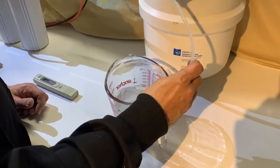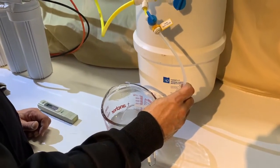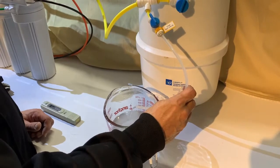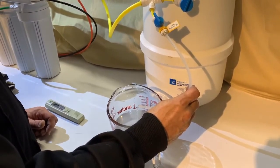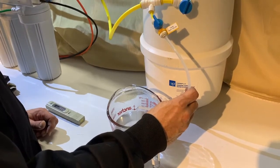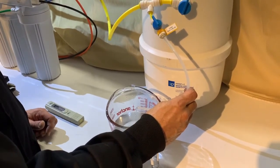Once the water slows to a trickle, as you can see it's doing here, we are now going to let it run for 90 seconds to flush the water out of the system and test the water that's currently being made.